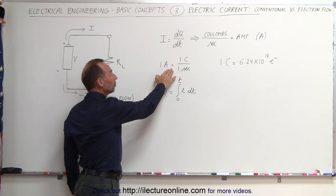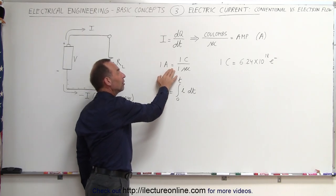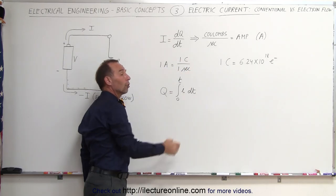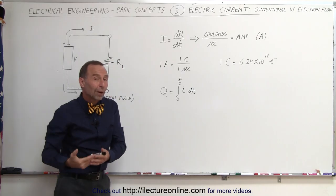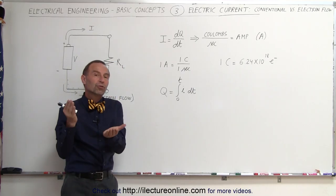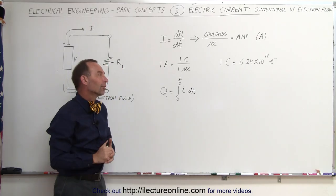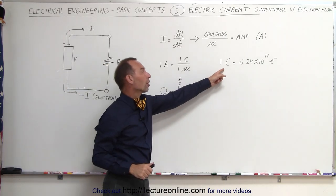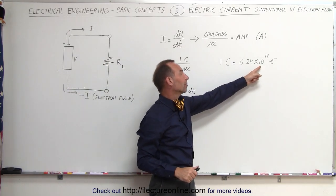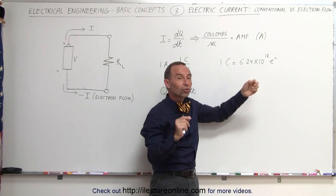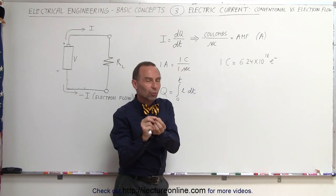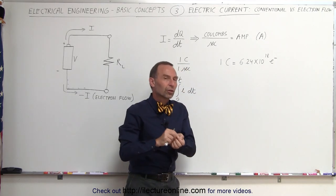One amp is determined or defined by the ratio of one coulomb per second. When you know we have a current flow of one amp, you know that there's one coulomb of charges passing that point every single second. A coulomb of charge is equal to 6.24 times 10 to the 18th unit charges. The unit charge, of course, the charge we have on a single electron or a single proton.